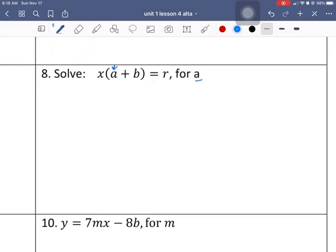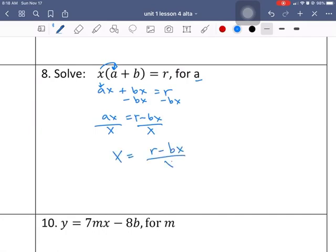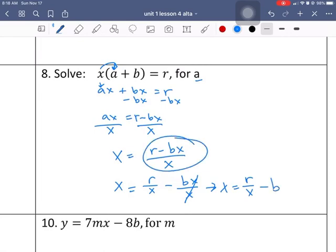Okay. Solve for a. a is right here. a, x, plus b, x, equals r. Still want this, so this is being moved. a, x, equals r, minus b, x. And then I need the a. x equals r, minus b, x, over x. That's fine for me. If your instructor wants you to reduce, then that would be r over x minus b over x. And then the x's disappear. So that would be x equals r over x minus b. Okay. Or that.